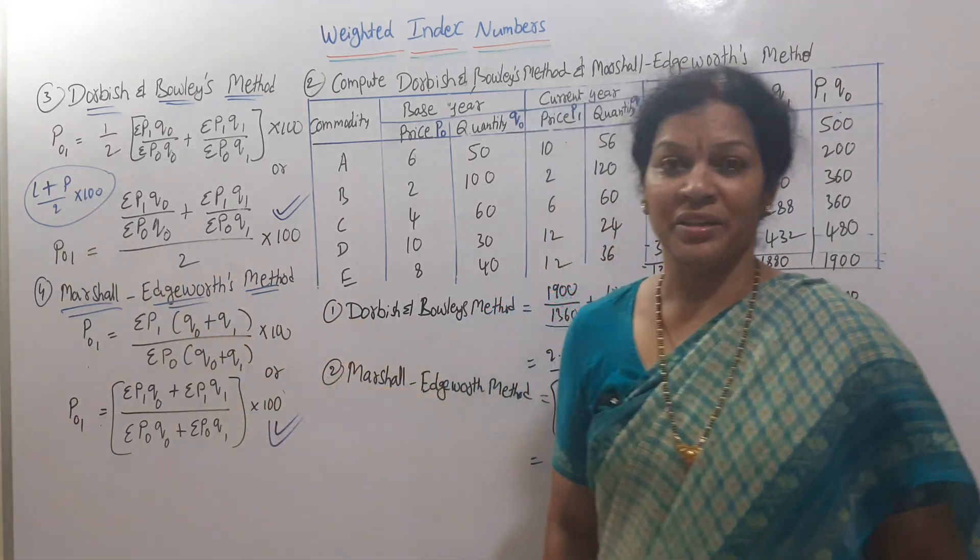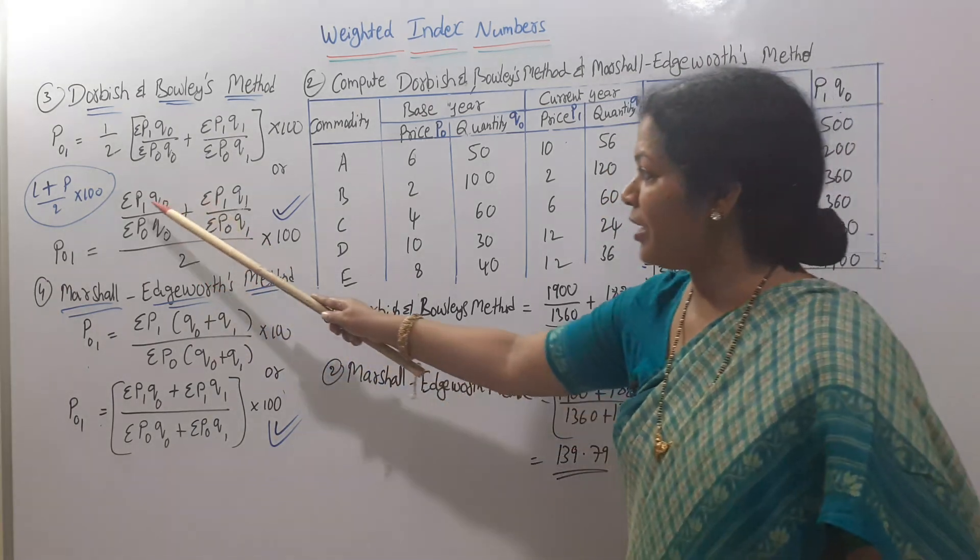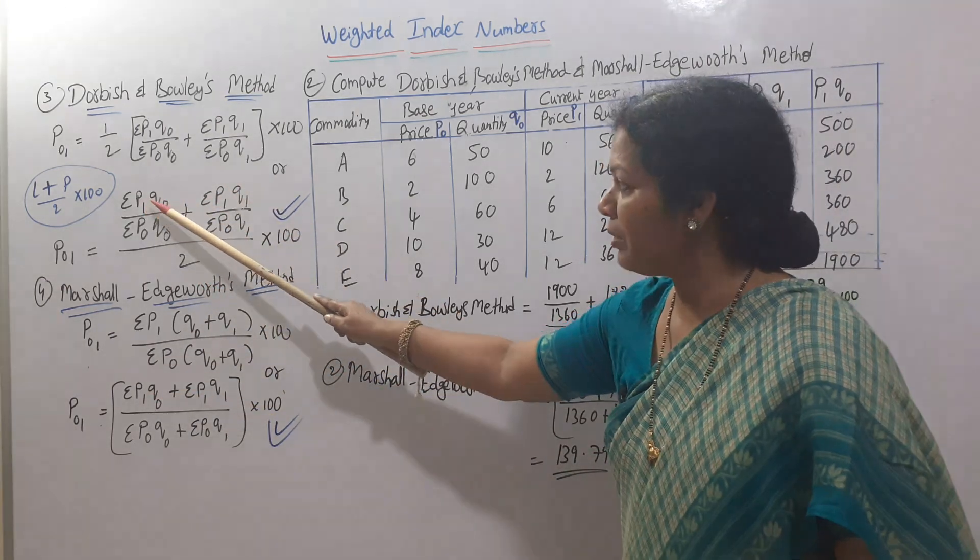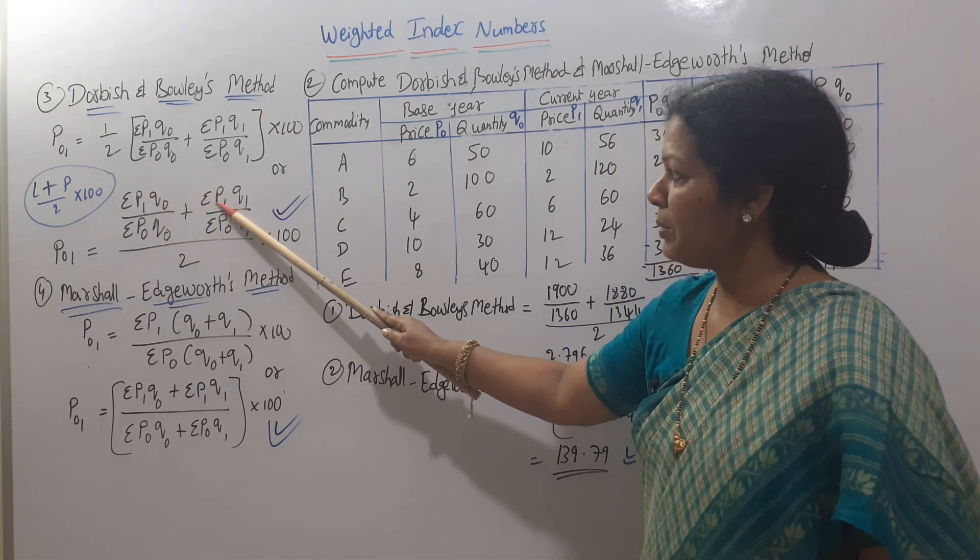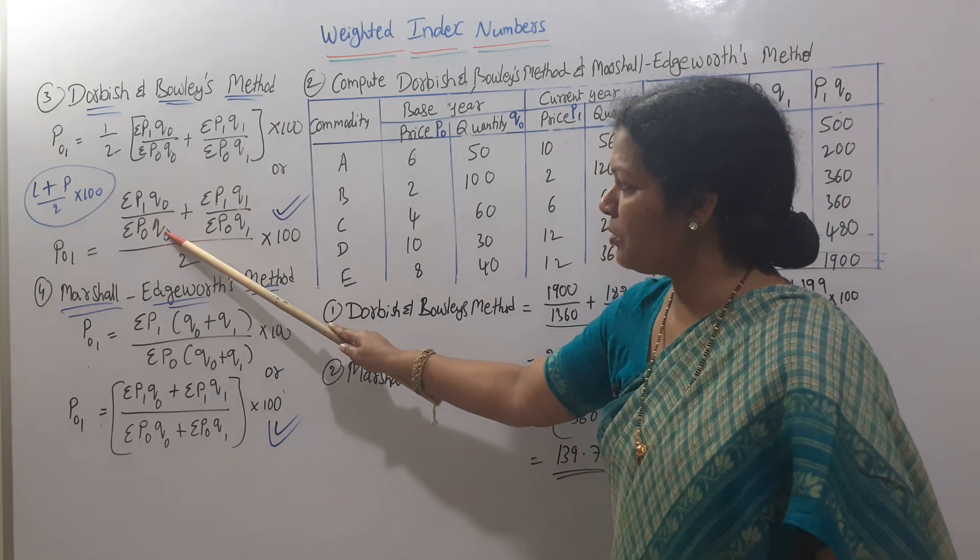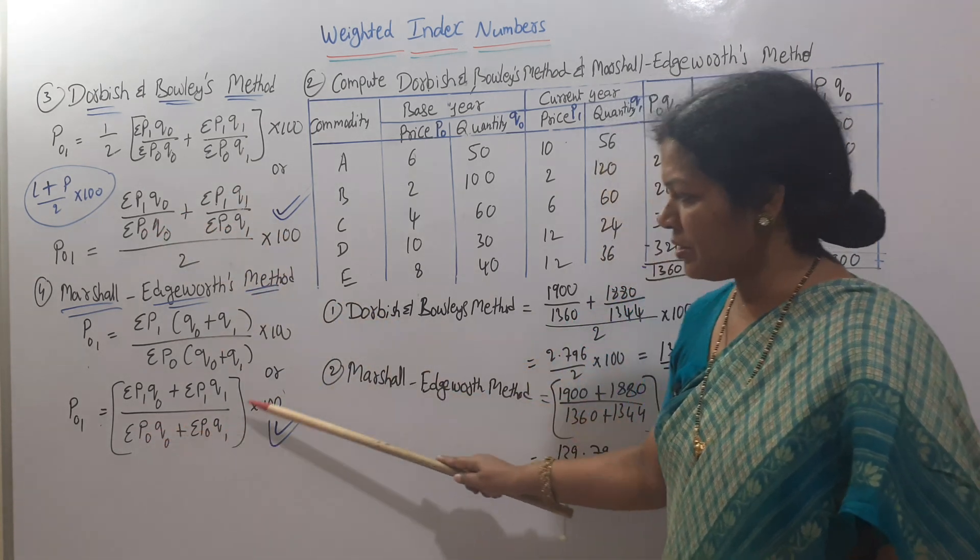Marshall-Edgeworth method: P1Q0 plus P1Q1 divided by P0Q0 plus P0Q1 times 100. That's all. If you remember the formulas and apply them, you'll get the same answers.